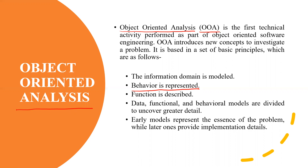So we have all objects and related information. We will model them first, represent them, then look at what their behavior is — in which way each entity and each object will behave. We will show their functionality and describe them. Then with that, we will create the data, functional, and behavior models.